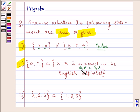So a and e are present in this set, so that means it is a subset. So that means this is a true statement which is given to us.